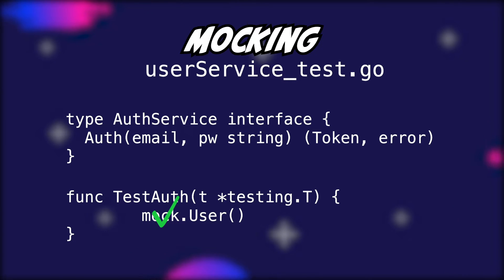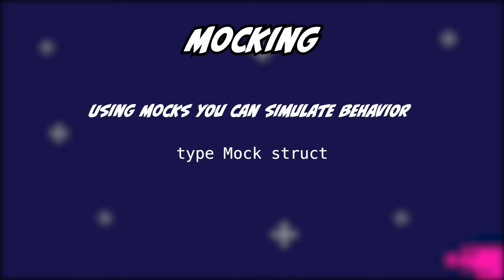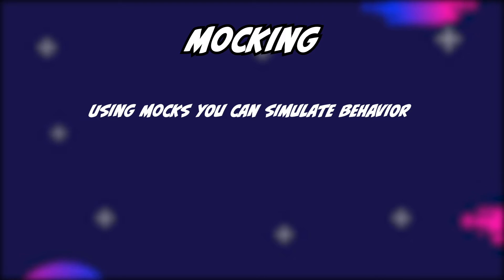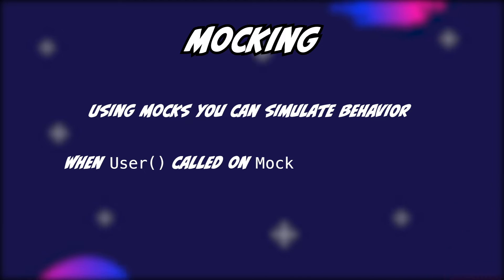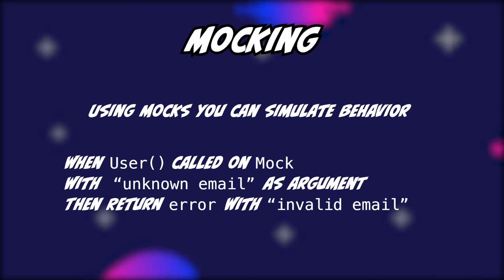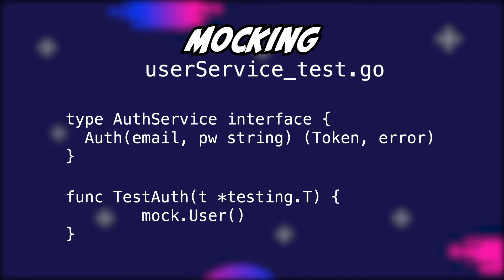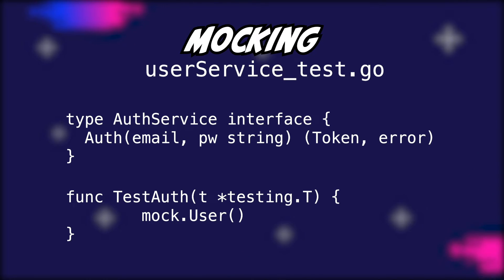Imagine you could simply take your repository, replace it with a mock, and all of a sudden all your problems are gone. Generally speaking, you can use mocks to simulate behavior. In Go, a mock is nothing more than a struct, and in order to simulate behavior you need to tell it what to do under specific conditions. For example, you can tell it that when the user function gets called with an unknown email, it should return an error with a specific error message.